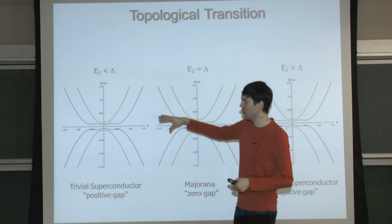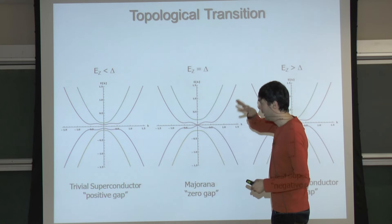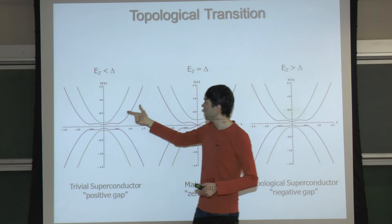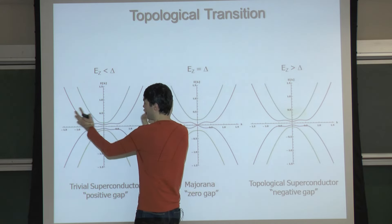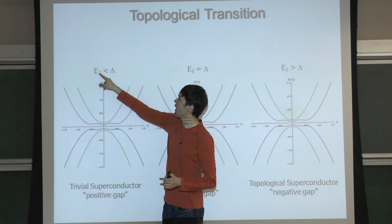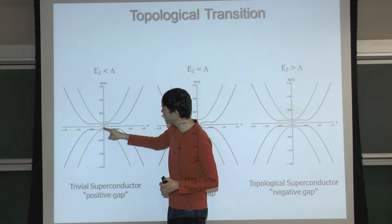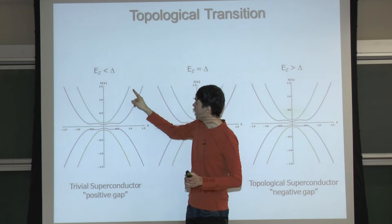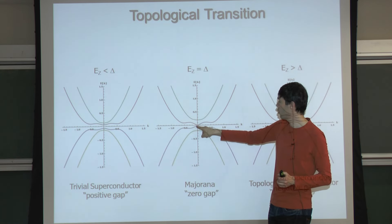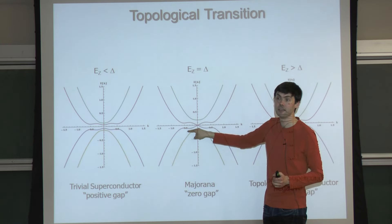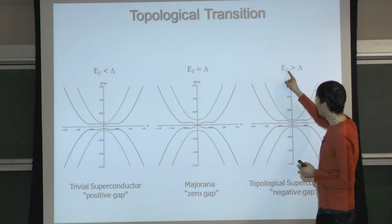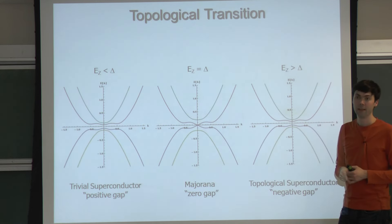Here are the spectra including spin-orbit, superconductivity, and magnetic field. The subbands are already split by spin-orbit - that's why we see double features - and we have the gaps. The interplay of Zeeman energy and the superconducting gap controls the central gap. When Zeeman energy equals the gap, the gap at zero momentum closes, giving a perfect Dirac dispersion relation around zero. Then once the Zeeman energy exceeds the gap, the gap opens again.